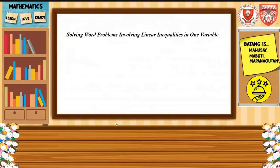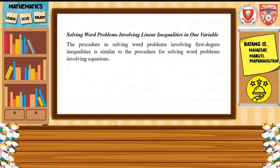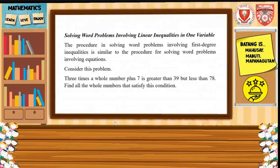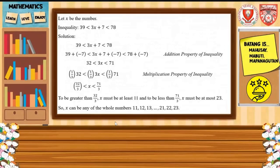Now let us solve word problems involving linear inequalities in one variable. The procedure in solving word problems involving first-degree inequalities is similar to solving word problems involving equations. Consider the first problem, number 1: 3 times a whole number plus 7 is greater than 39 but less than 78. Find the whole number that satisfies this condition. Let x represent the unknown number.